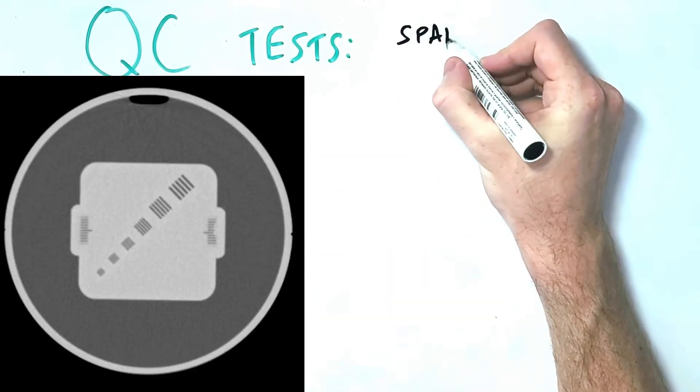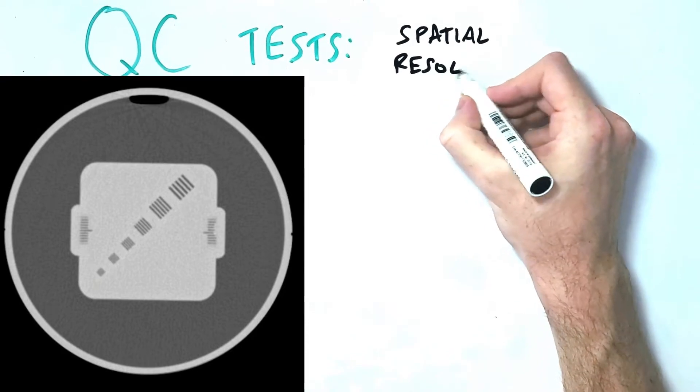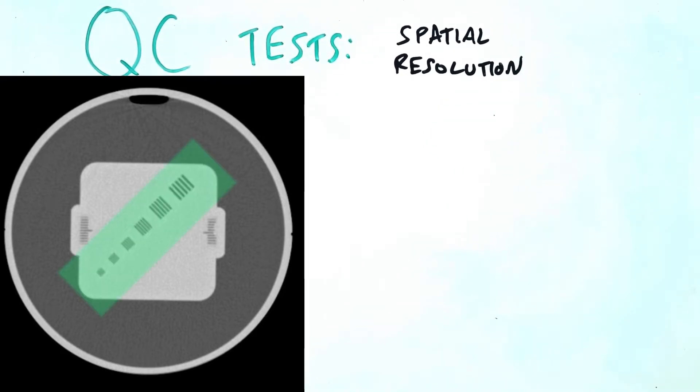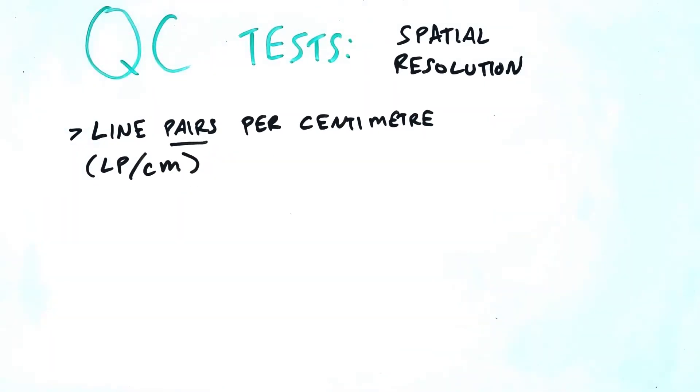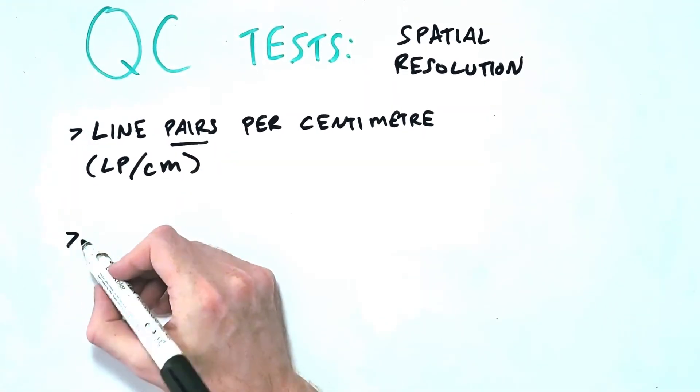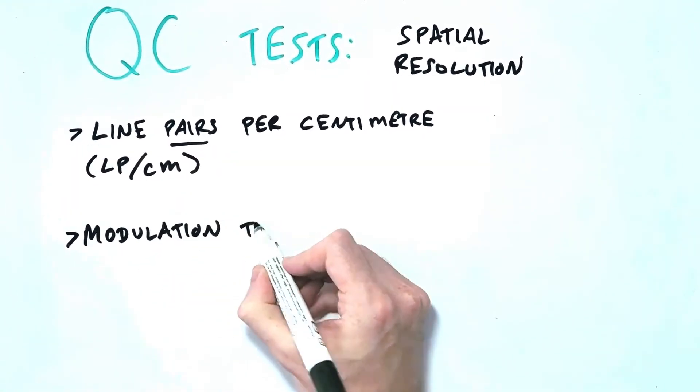Also shown on this phantom, we have the spatial resolution test with these sets of lines in the center which gets closer and closer together. Spatial resolution is the ability to resolve between two different objects which are close together in physical space, like these adjacent light and dark lines. In CT, spatial resolution is described in terms of line pairs per centimeter.